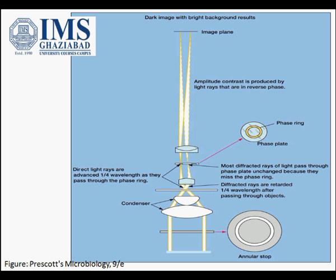The undeviated ray, which missed the specimen, strikes the phase ring in the phase plate. The deviated light misses the phase ring. When the undeviated (direct) light rays pass through the phase ring, they are advanced by 1/4 wavelength. Because of this, the deviated and undeviated waves are 1/2 wavelength out of phase, and so they cancel each other when they come together to form the image.